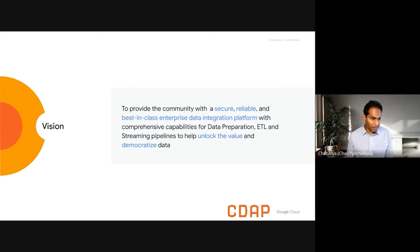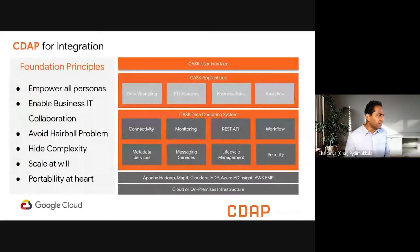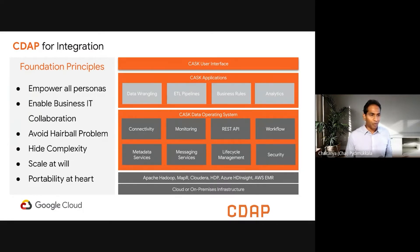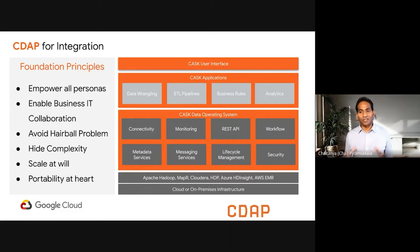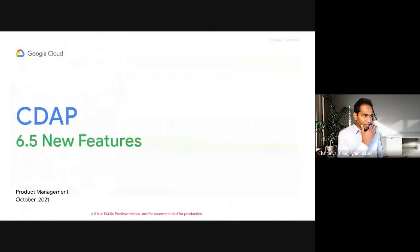The challenges we are trying to solve include empowering all personas, ensuring business-IT collaboration, and solving the integration hairball problem with high complexity. But CDAP also lets you peel back the covers and do whatever you want. You should be able to run it on-premises, on any cloud, or on Google Cloud, and scale at will. With that, we have created a data operating system that has all the connectors, metadata services, and everything baked in. We just released version 6.5.